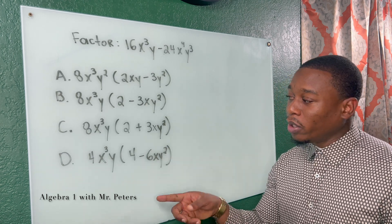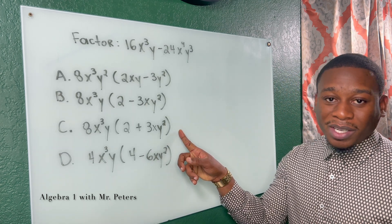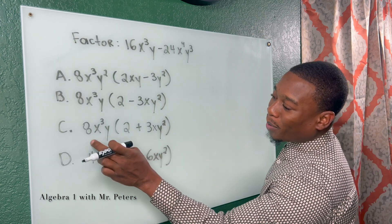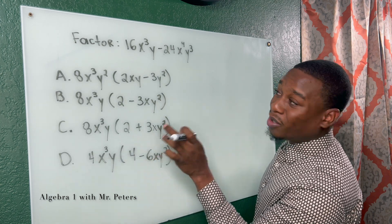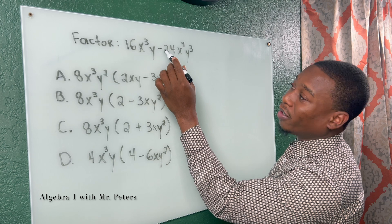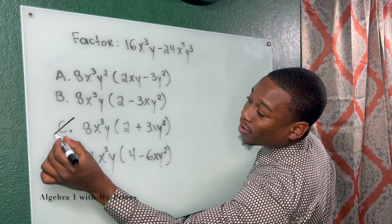Let's just start off. Number one, C cannot be the answer. If we multiply a positive number with another positive number, there's no way in the world we could get a negative sign. So that's gone.